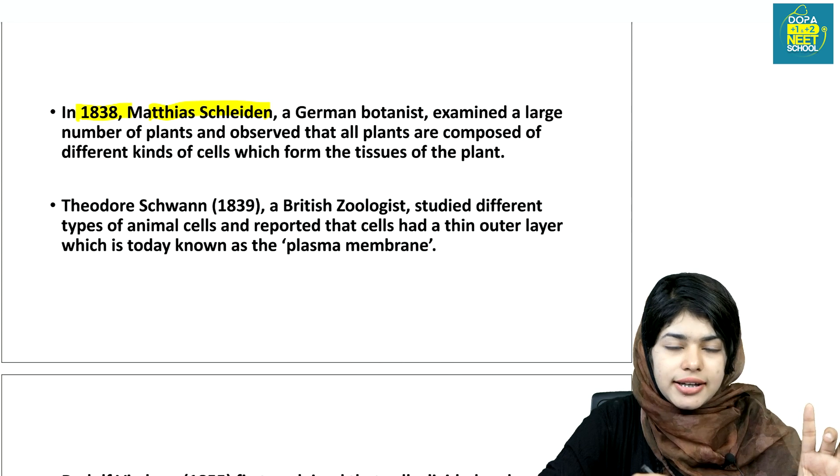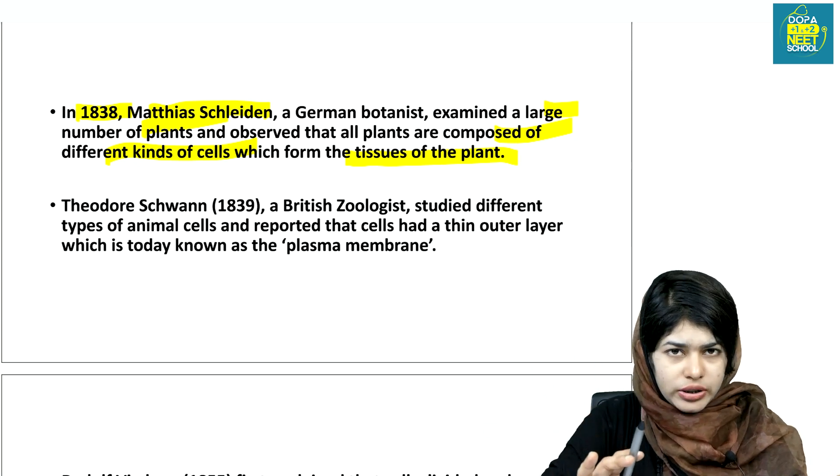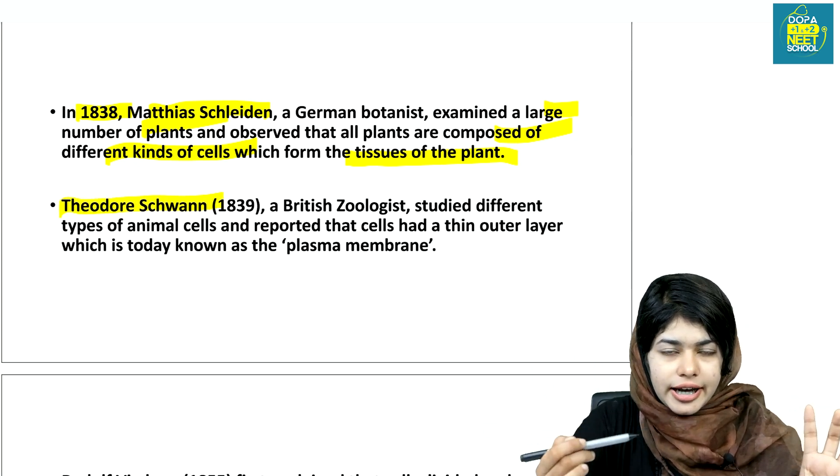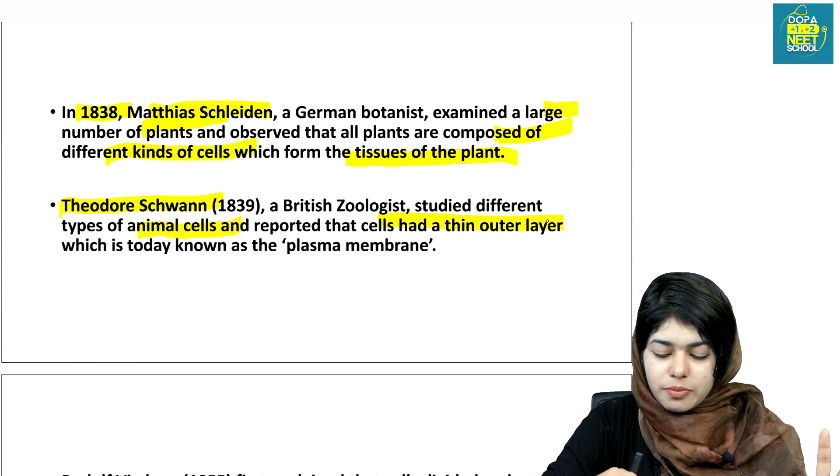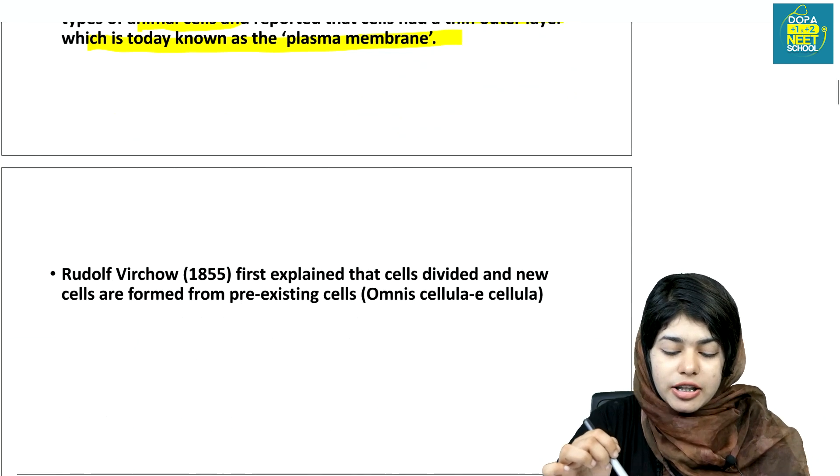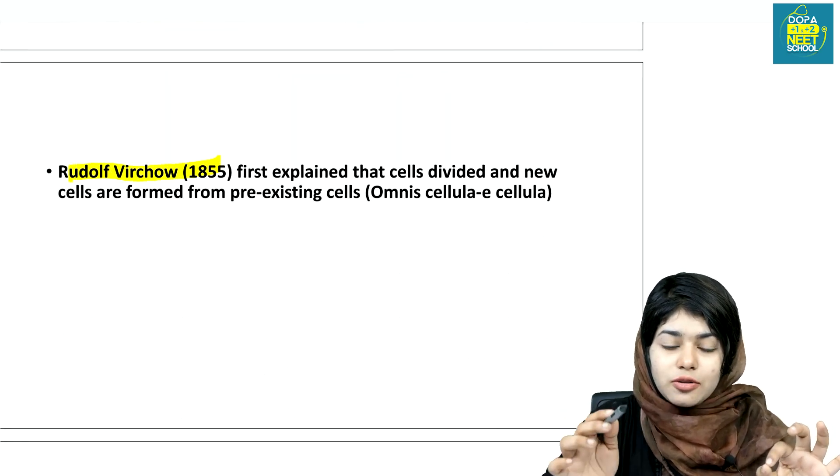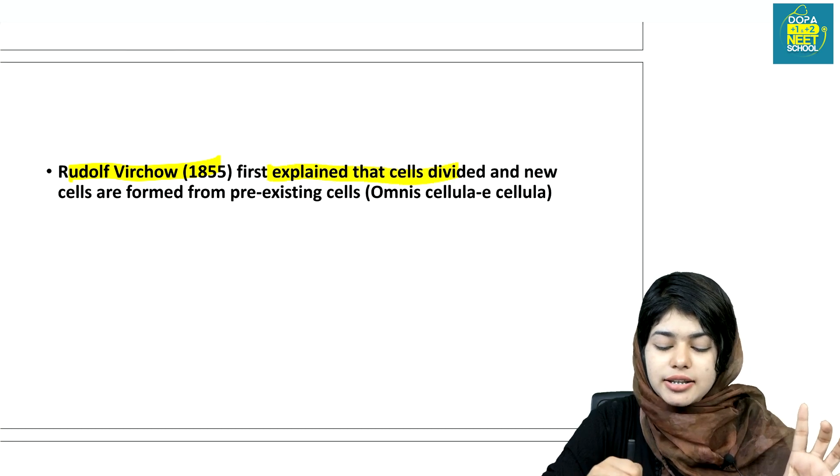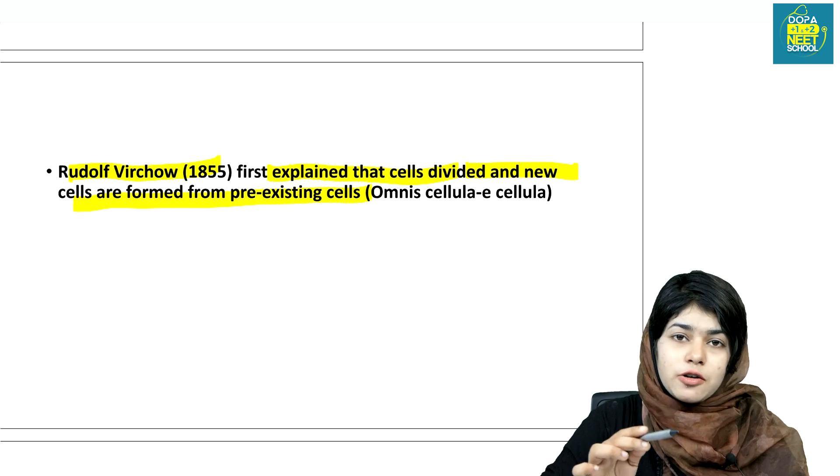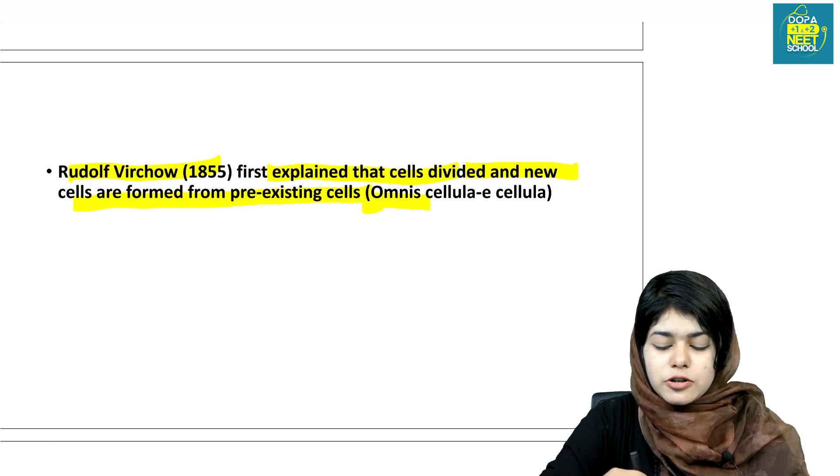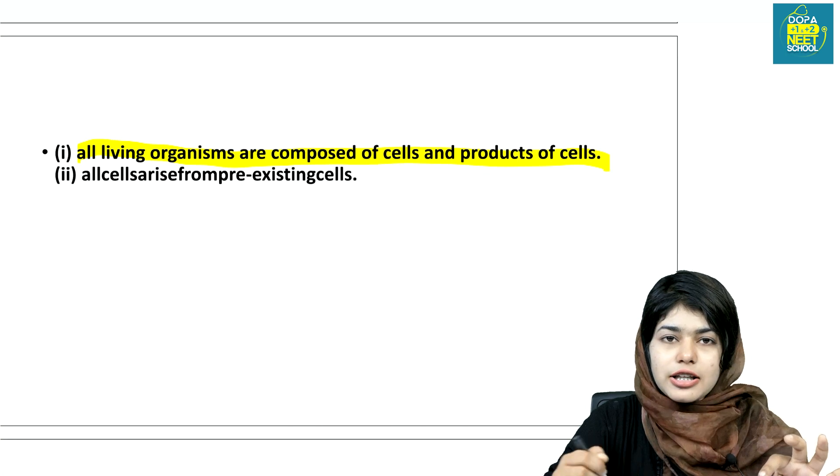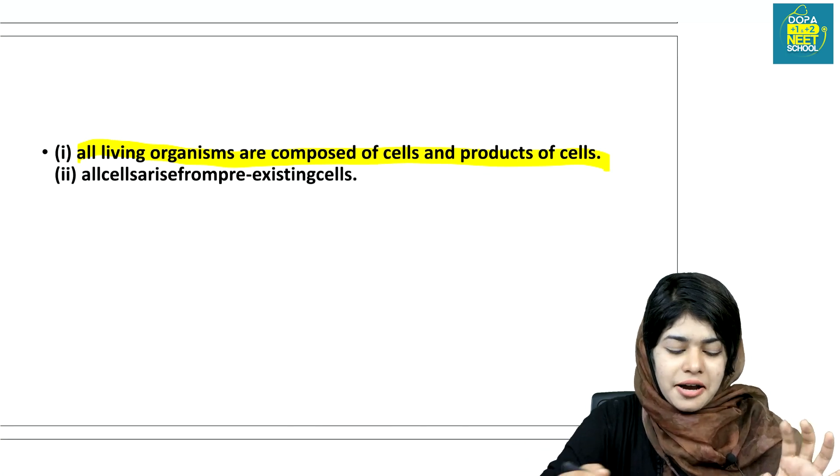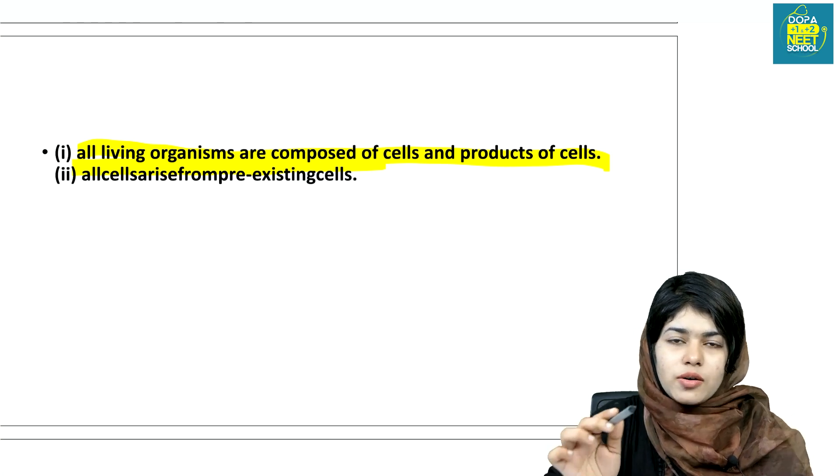In 1838, Matthias Schleiden said that plants are composed of tissues. Looking at cell theory, all living organisms are composed of cells. All cells arise from pre-existing cells.